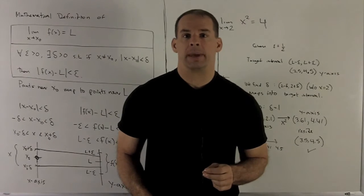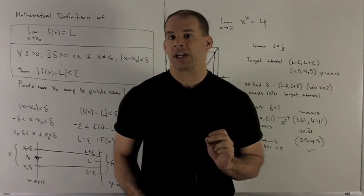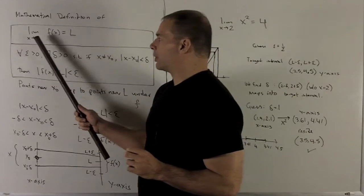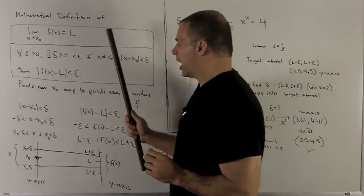Now let's look at the formal definition of a limit. We can thank Weierstrass for this. So we have, if I have a limit x going to x0 of f(x) equal to L.